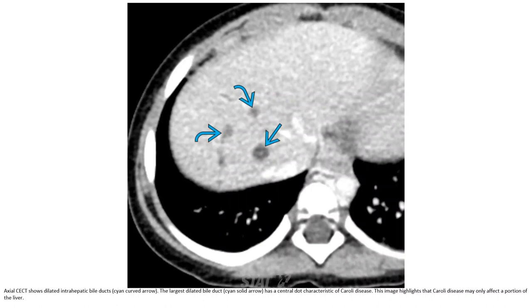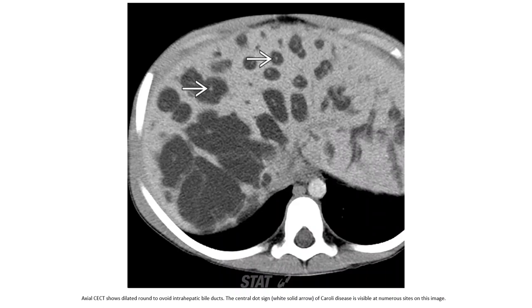Contrast-enhanced CT shows dilated intrahepatic bile ducts. The large, dilated bile ducts have a central dot characteristic of Caroli disease. This image highlights that Caroli disease may only affect a portion of the liver. Contrast CT also shows dilated round to ovoid intrahepatic bile ducts, with the central dot sign visible at multiple sites on this image.